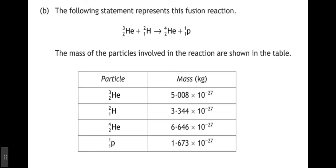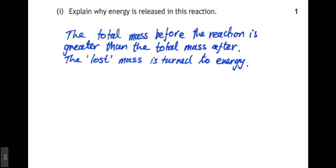The following statement represents this fusion reaction. So, there's our helium nucleus and our deuterium, and that makes the alpha particle, the 4-2 helium nucleus, plus one proton. And we are given a table telling us the masses of each of the particles involved. Explain why energy is released in this reaction. Well, if we add up the total mass before the reaction, and the total mass after the reaction, we'll find some mass has been lost. This lost mass is turned into energy.